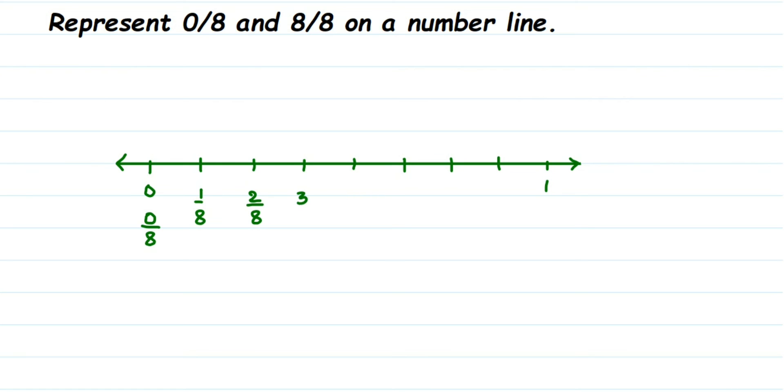Then 4/8, 5/8, 6/8, 7/8, and the last will be 8/8. But 8/8 is nothing but 1, because when you divide 8 by 8 you will get 1 as the answer.